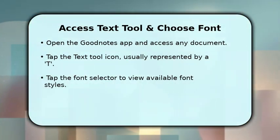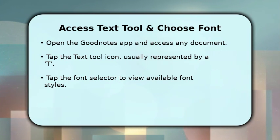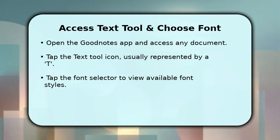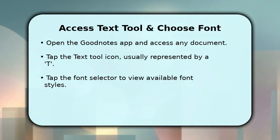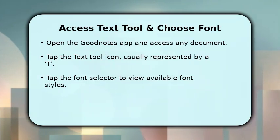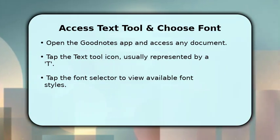To begin, open your GoodNotes application and either create a new document or open an existing one. Locate the text tool icon in the top toolbar — it often looks like a capital T inside a box.